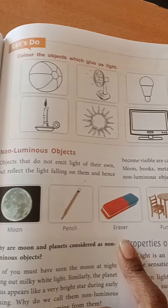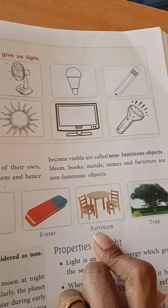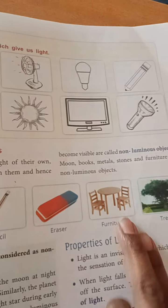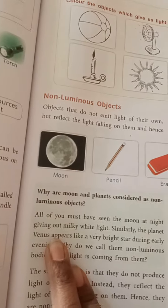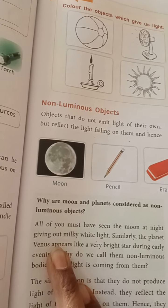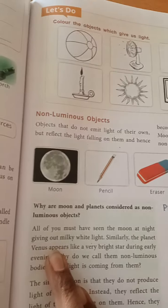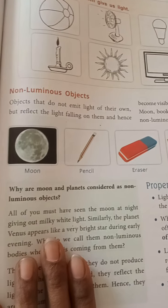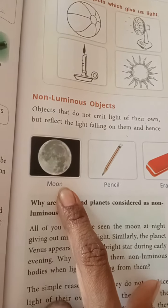Non-luminous objects include books, metals, stones, and furniture. The moon is also a non-luminous object. You know the moon appears to emit light, but why are the moon and planets considered non-luminous objects? Because the important source of light is the sun.